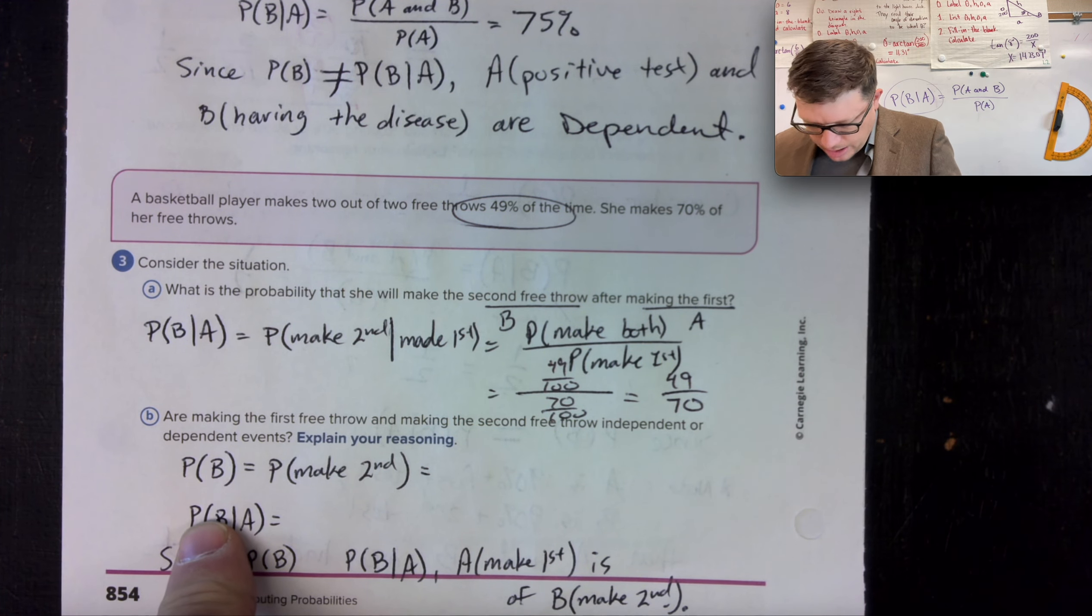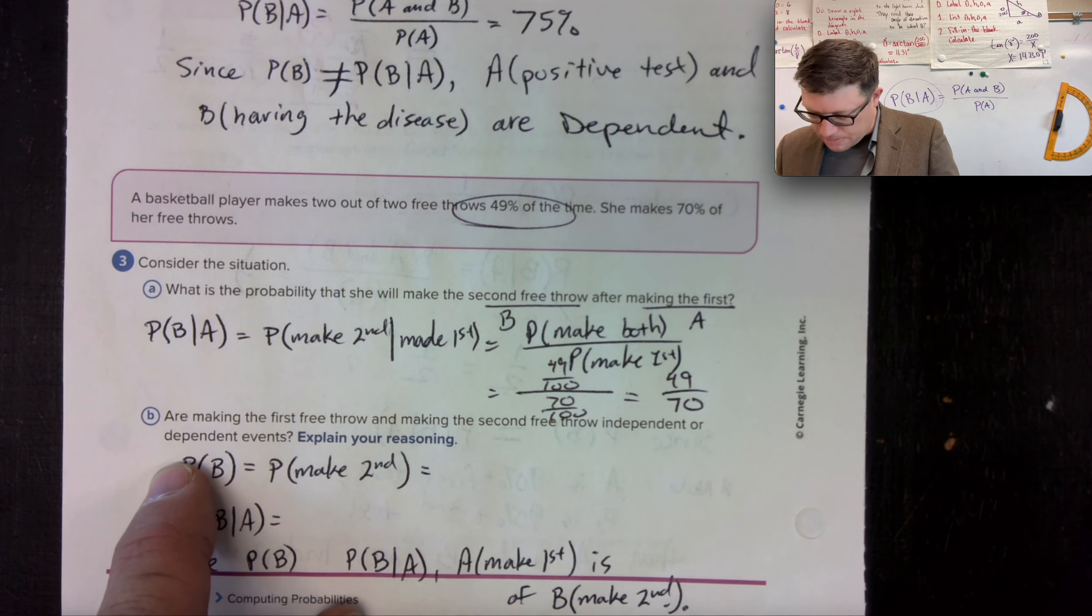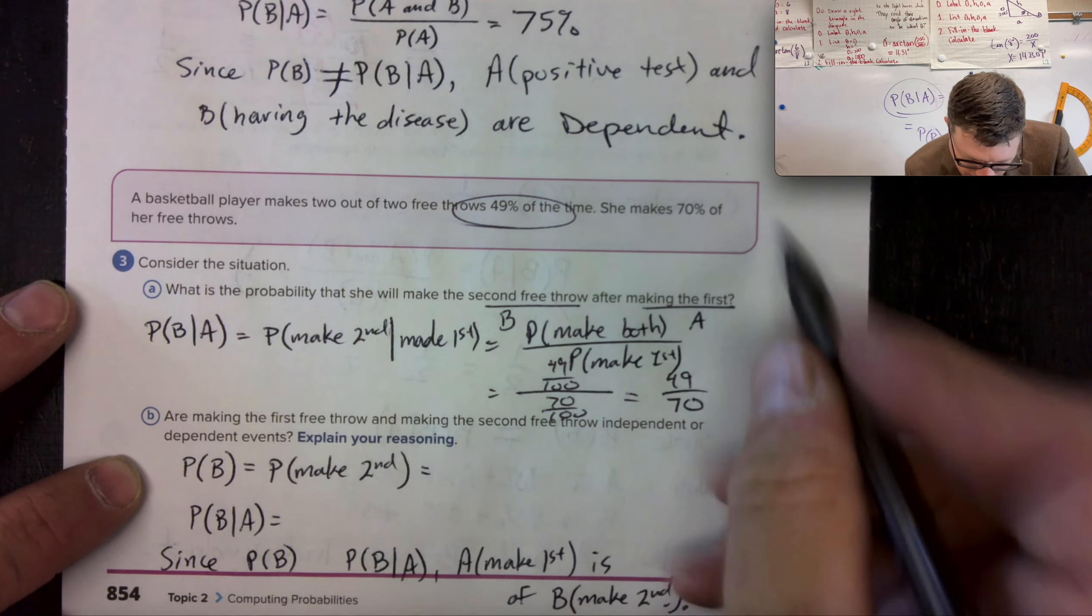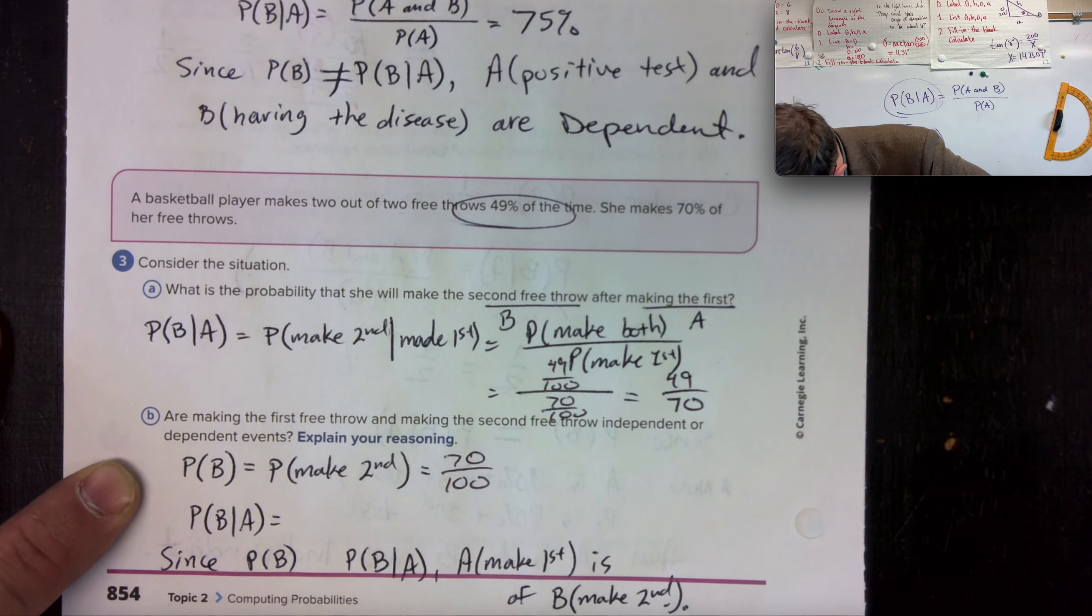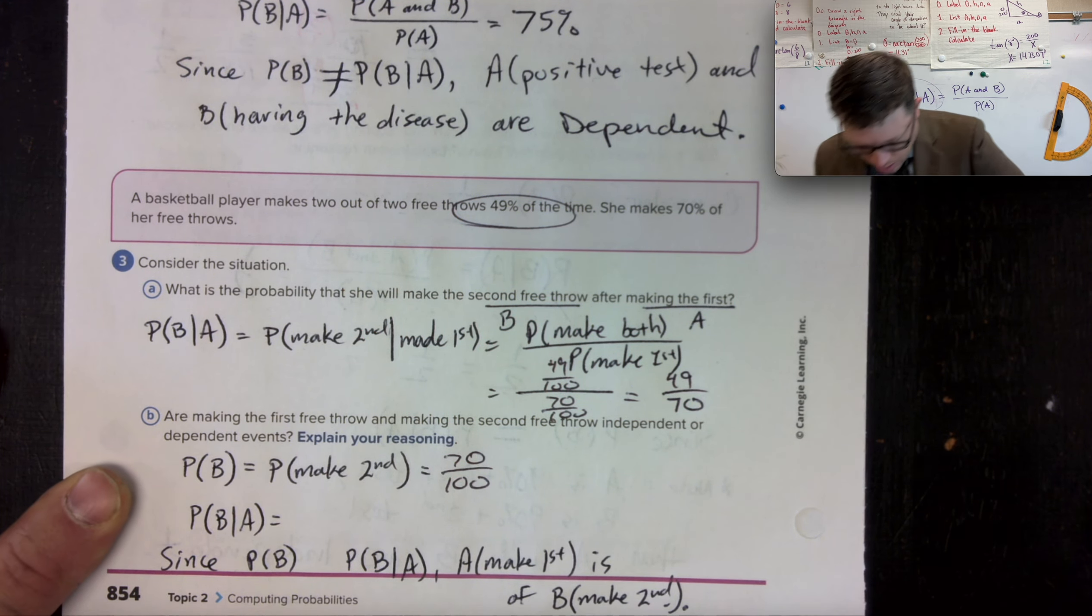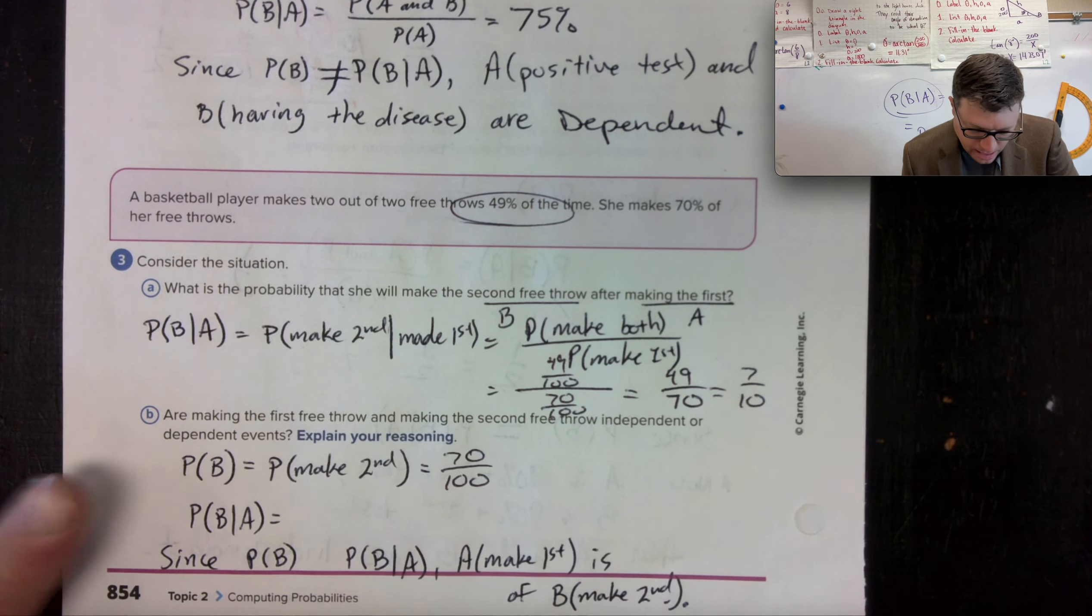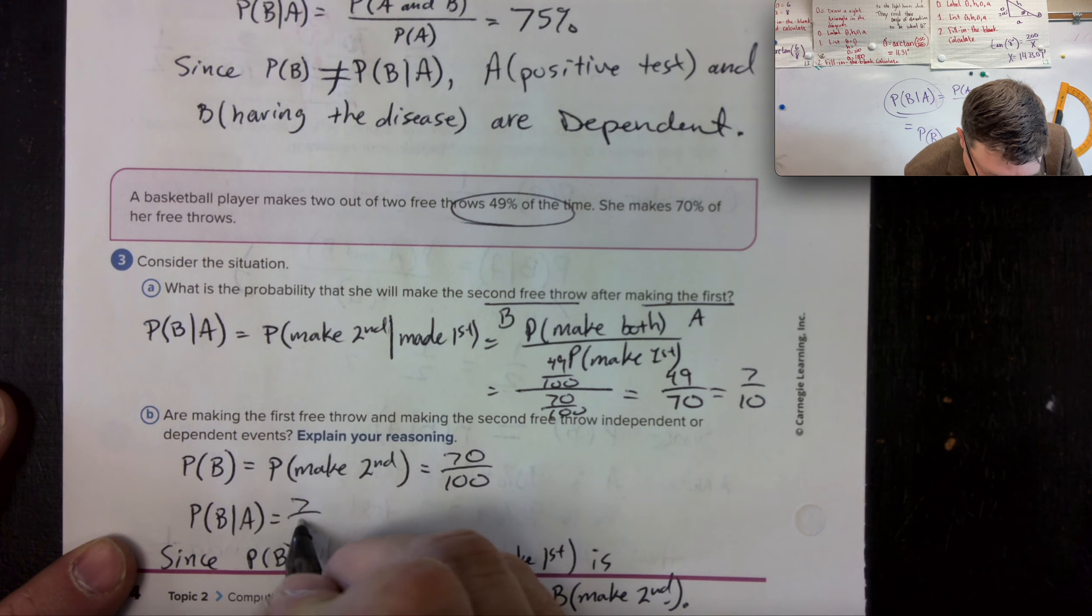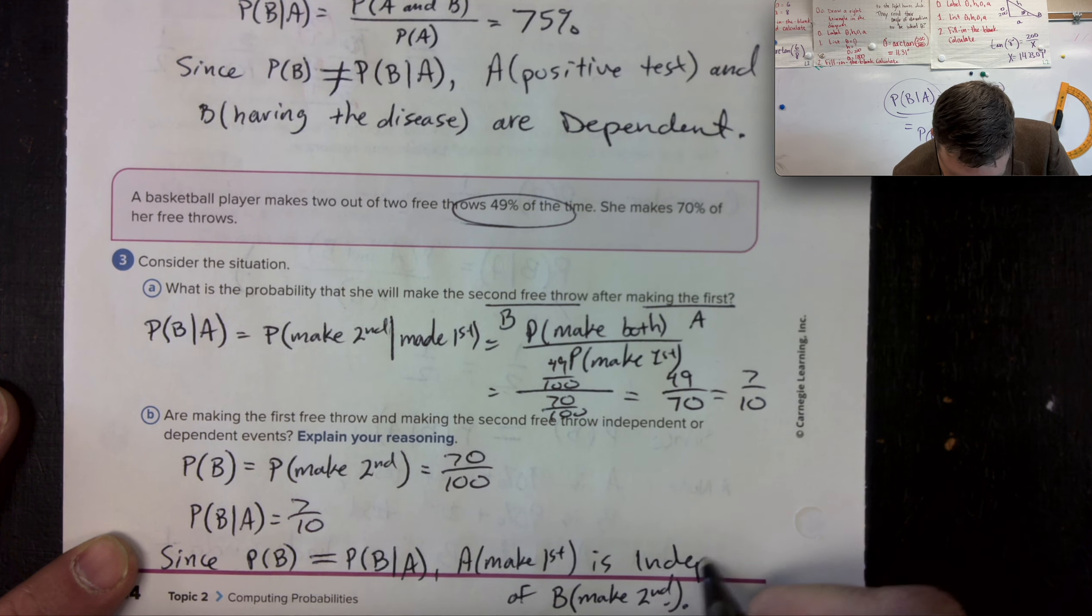Are making the first free throw and making the second free throw independent or dependent events? So the probability of making the second is 70 out of a hundred. Hold up. No way. Seven out of 10. This is also seven out of 10. They are equal. So it's independent.